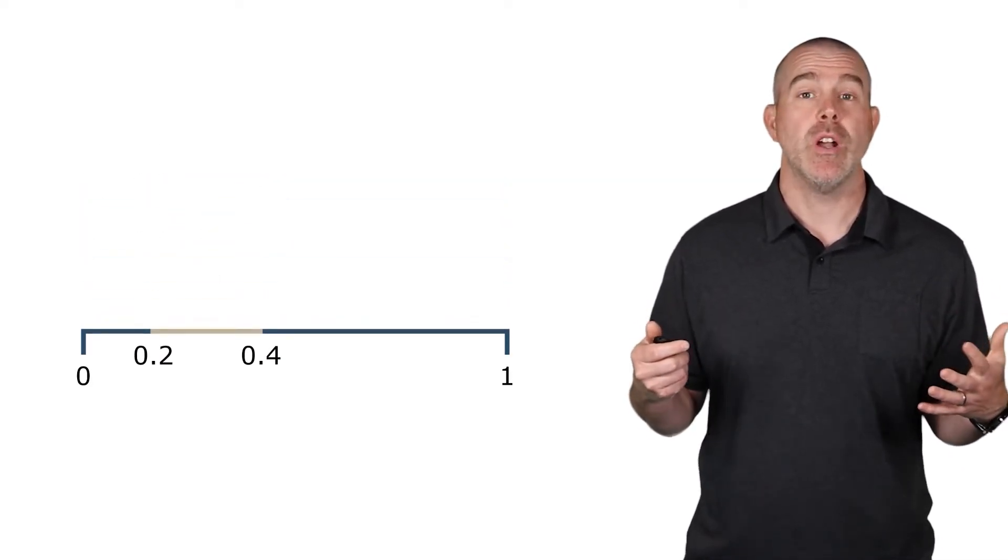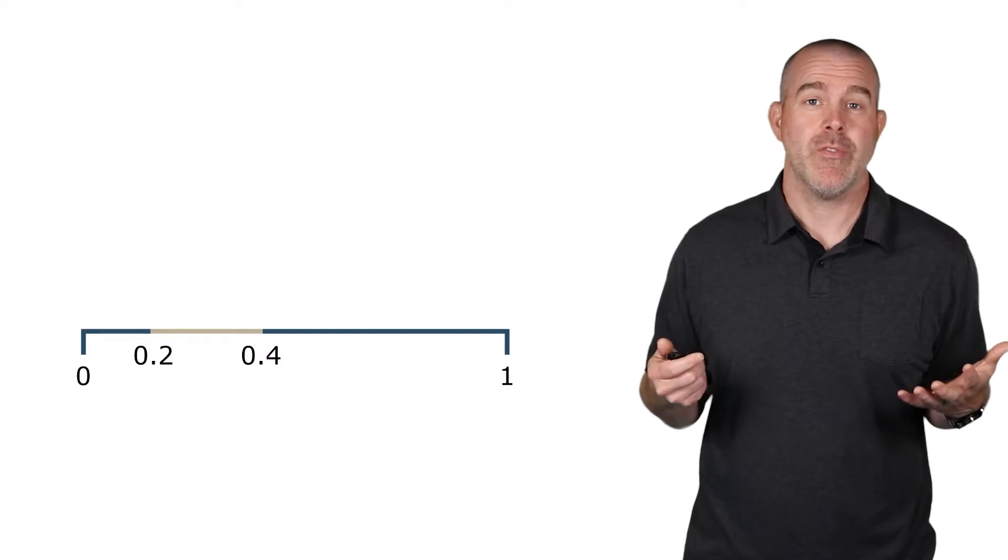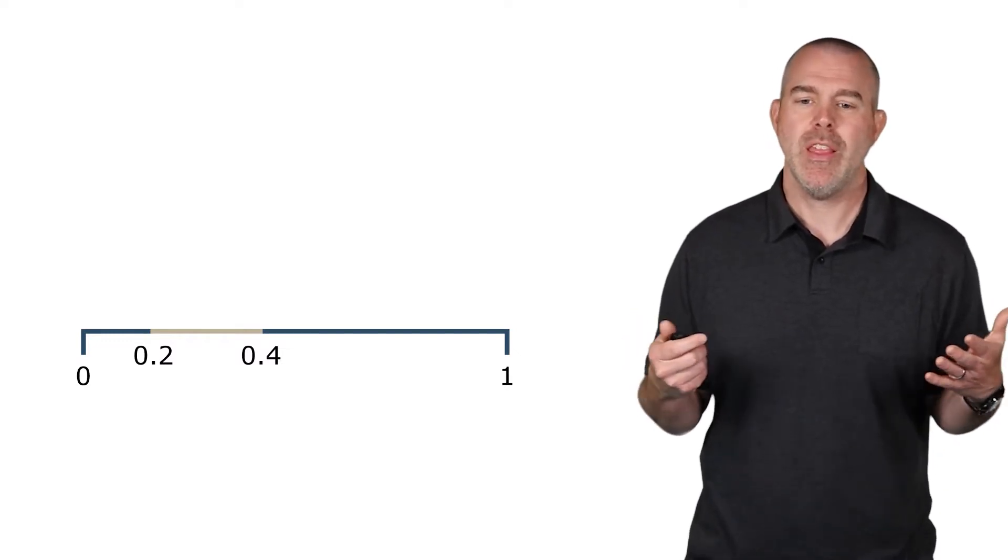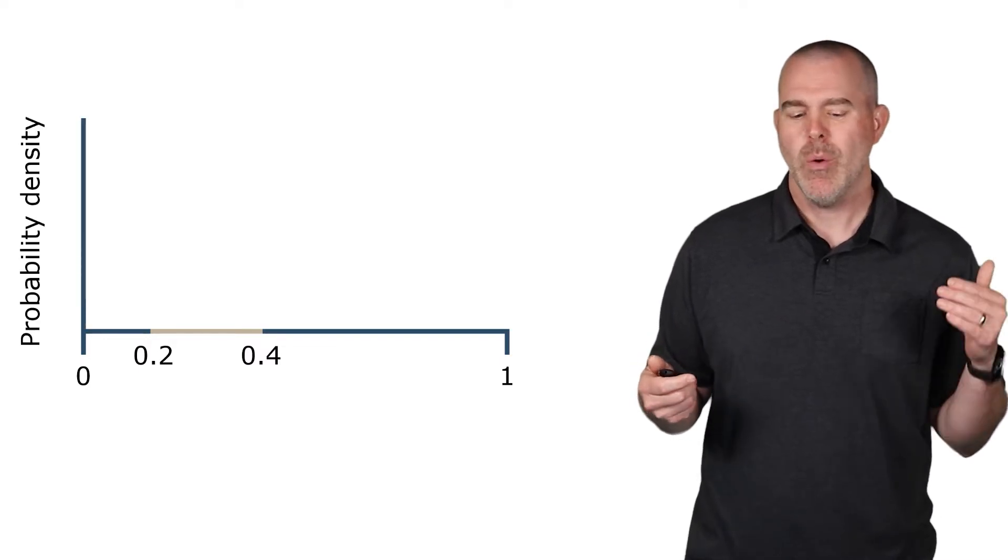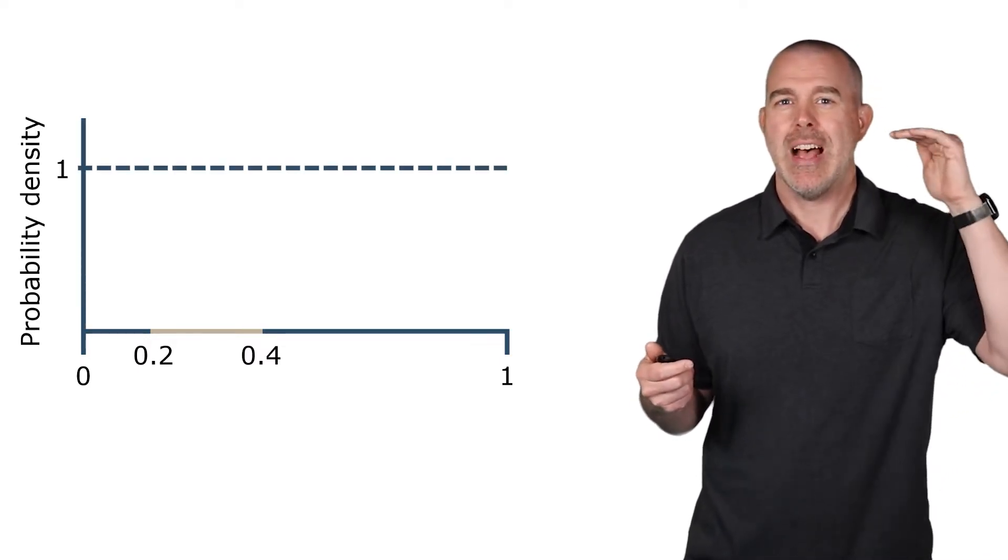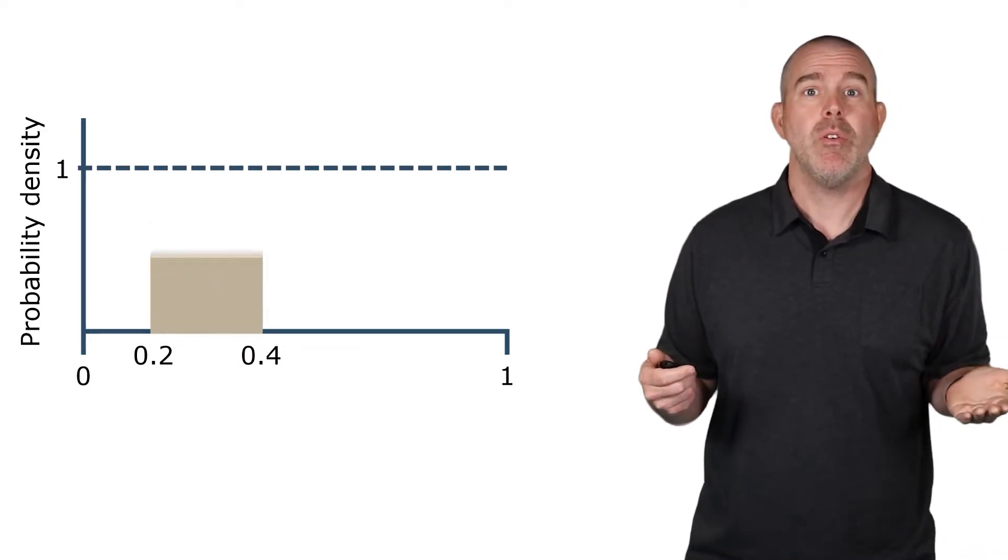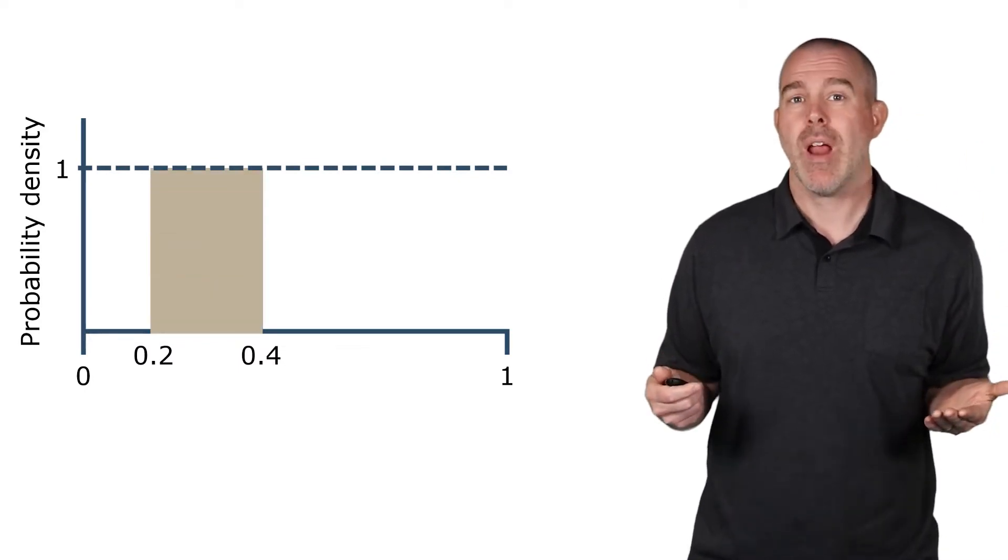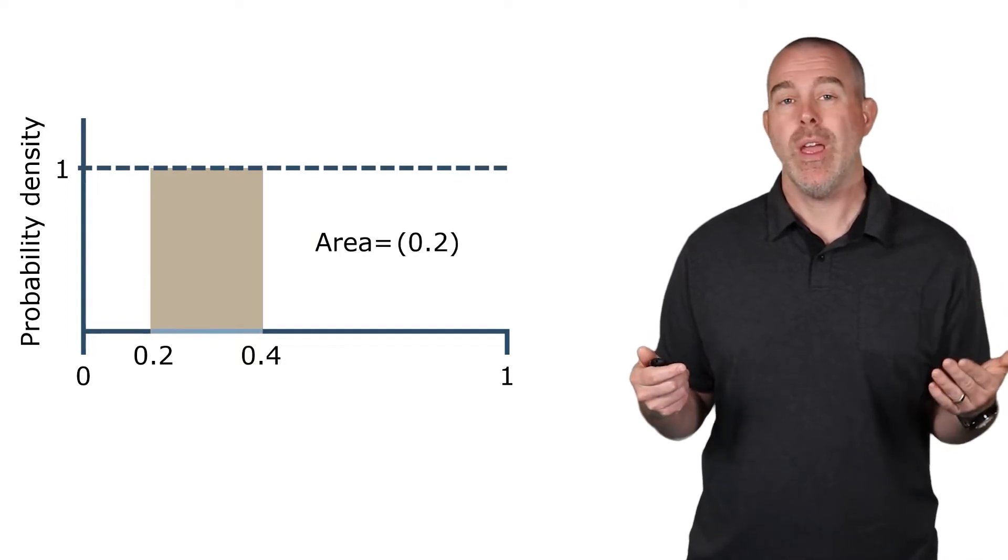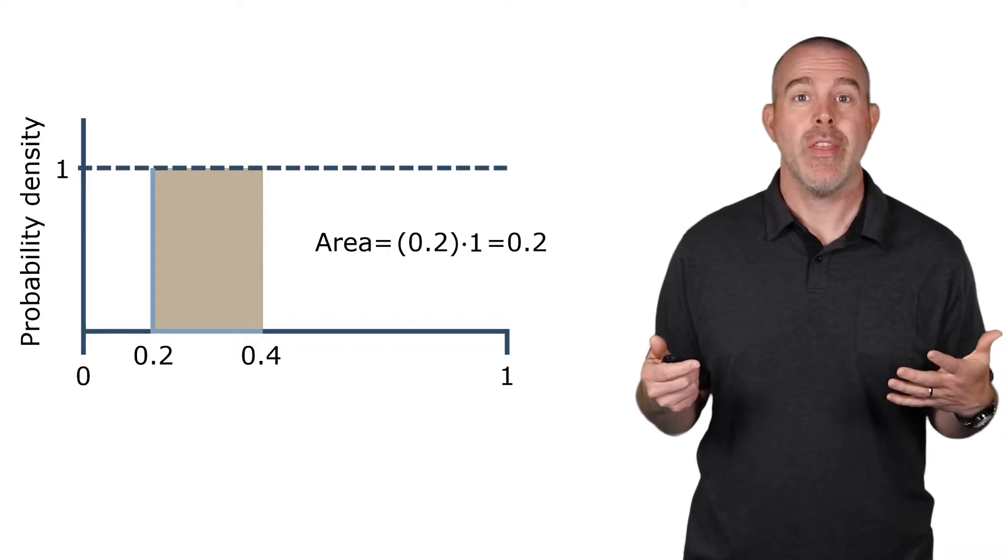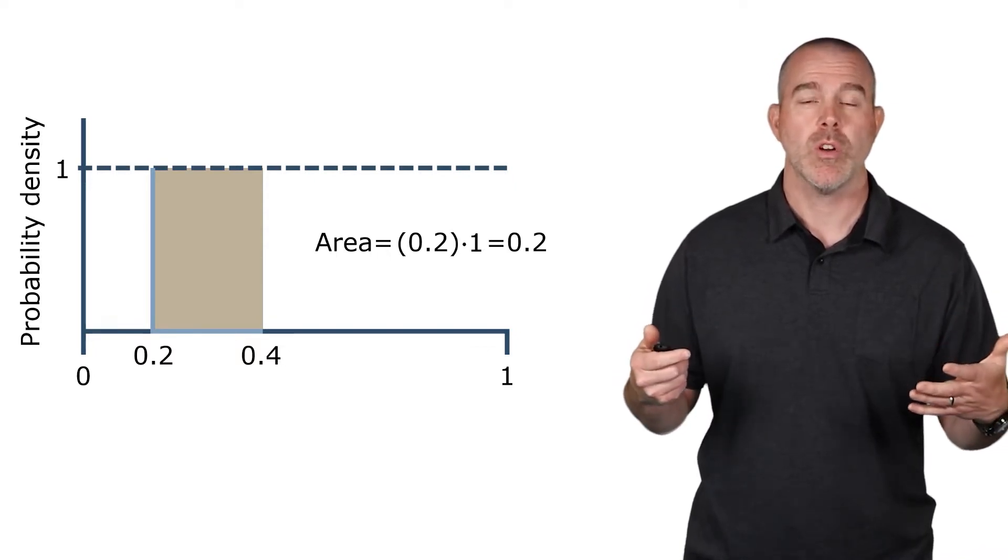Let's make a drawing of this one and try to get a probability density for this one. Since our number can be anything between 0 and 1, we really want to have a probability density that has 1 all the way across. That way, when we compute the area, we have this rectangle. Its width is 2 tenths, its height is 1, and so the area there is 2 tenths, which is that corresponding probability.